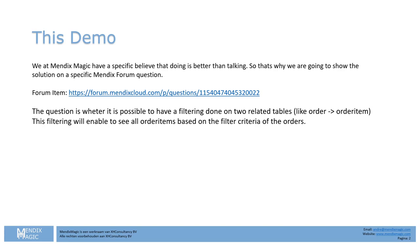Basically the question was: if I have two parts in a one-to-many relation — order and order item — and I filter on, for example, order and get a smaller list of orders, I want to see all the order items on that list. Easier said than done, but also in line with the philosophy of Mendix Magic: we are not only talking about solutions but also doing the solutions.